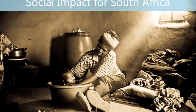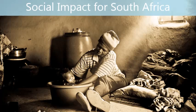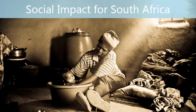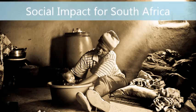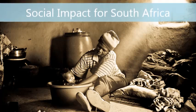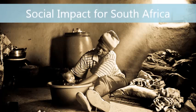The micro-utility model is a well-established social impact model for rural electrification in India and Bangladesh, though new from a South African point of view.